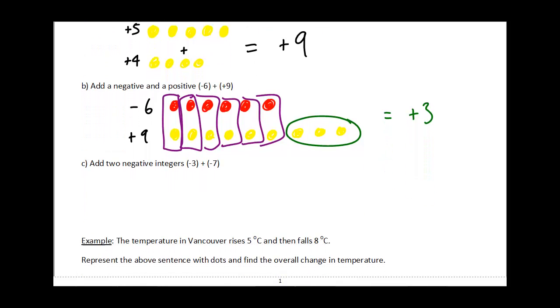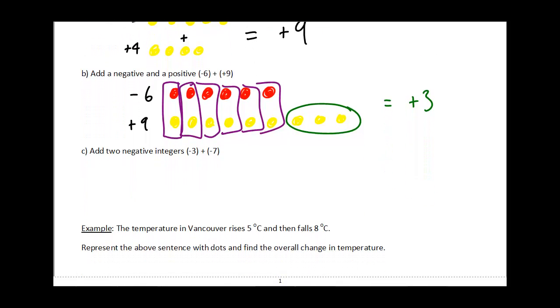When we add two negative integers, it works kind of similar to our two positives. So if we want to add negative three, then I'm going to do my one, two, three negatives. And negative seven would be one, two, three, four, five, six, seven negatives.